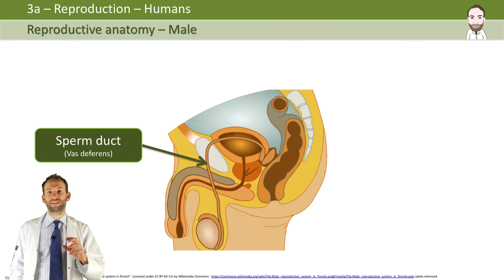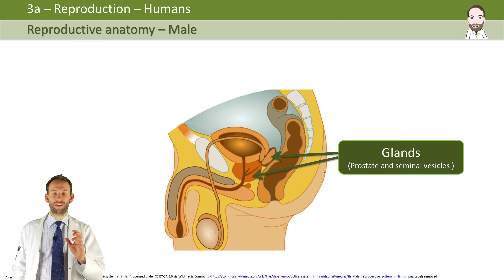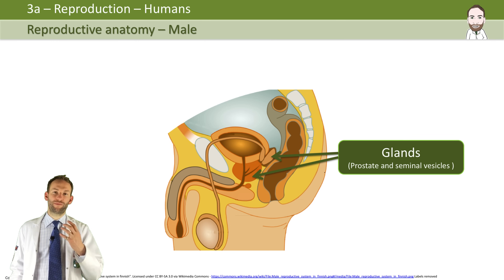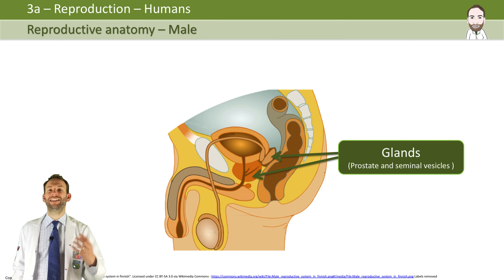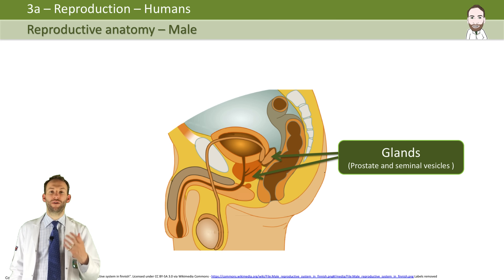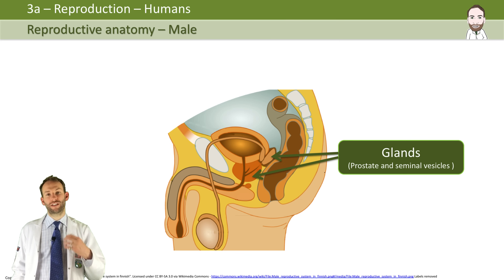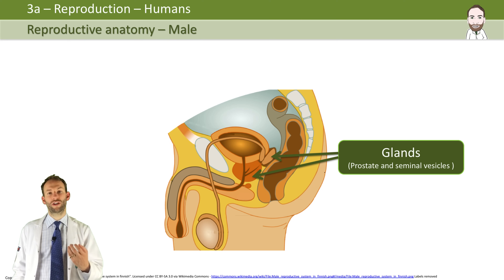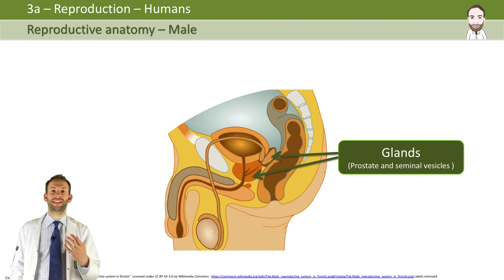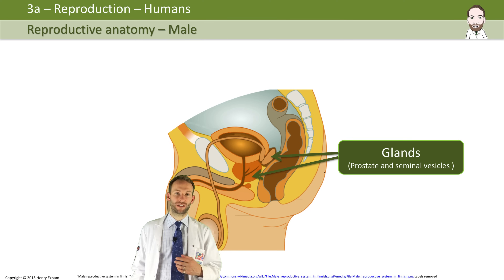The glands — the prostate and the seminal vesicles — are structures that produce the semen. The semen is added to the sperm and contains everything that the sperm need for their journey. It's full of energy and sugar for lots of respiration, and it's also alkaline to protect the sperm against the acidic nature inside the female reproductive system.